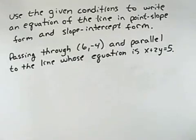Use the given conditions to write an equation of the line in point-slope form and slope-intercept form. Passing through the point (6, -4) and parallel to the line whose equation is x + 2y = 5.